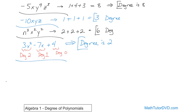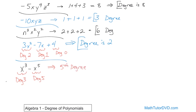For instance, if we have the binomial x cubed minus x to the fifth power, what would be the degree? You look at each term individually. The first term has only one variable — degree is 3. The second term has only one variable — degree is 5. So for the whole thing, it's a fifth degree polynomial.